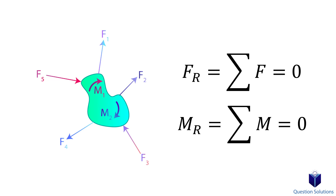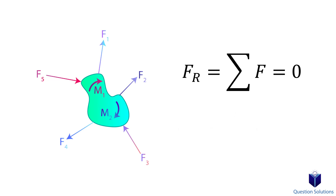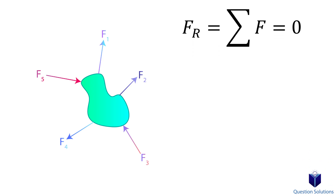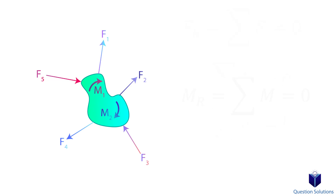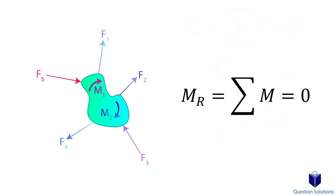In simple terms, the object is not moving. This equation means that the sum of all the forces acting on the object is equal to zero. We can break this down to forces in the x direction and y direction — all forces in the x direction added together must equal zero, and the same for the y axis forces. This equation means the sum of all the moments, including the ones being applied and the ones being created by the forces, is equal to zero.